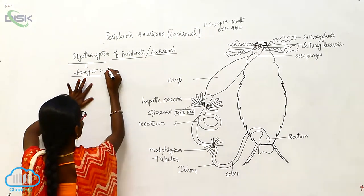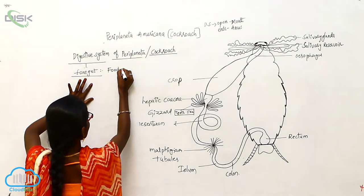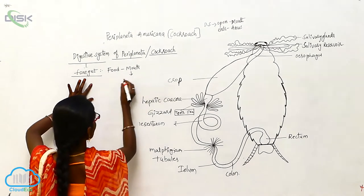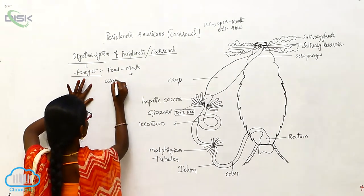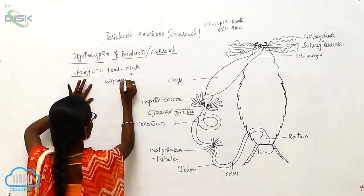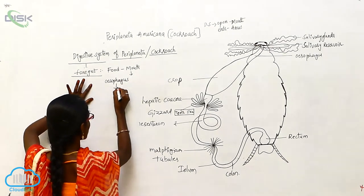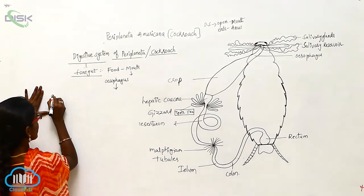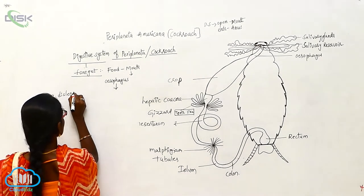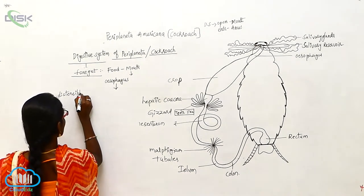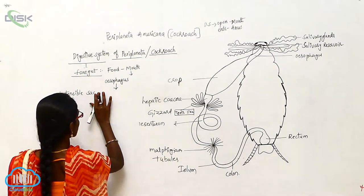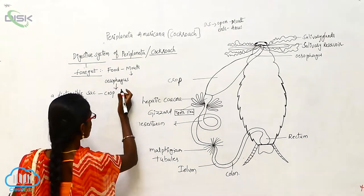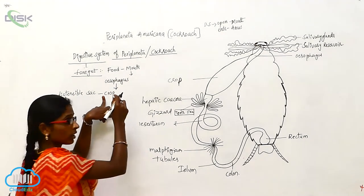Here the food enters into the mouth. From the mouth it goes to the esophagus. From the esophagus it enters into a distensible sac-like structure called the crop.